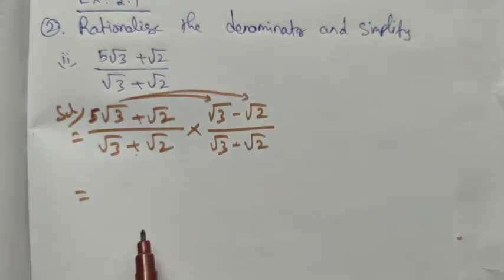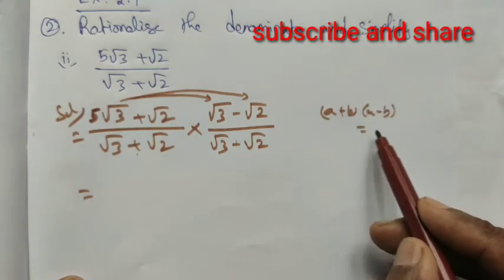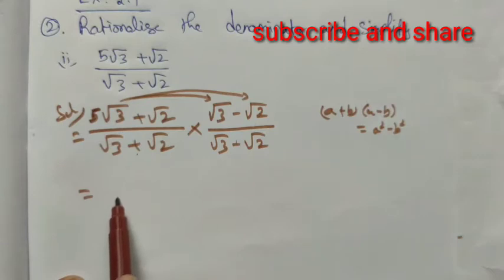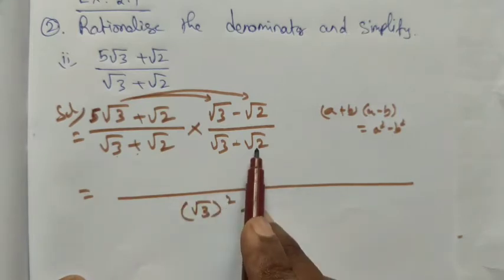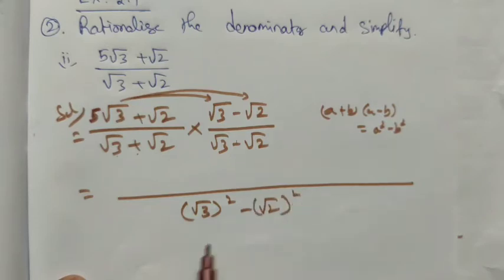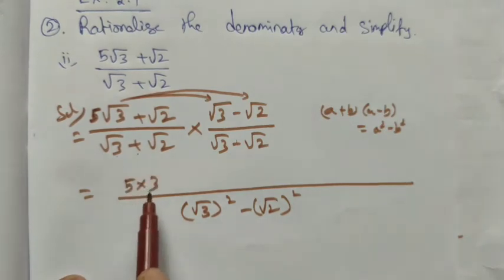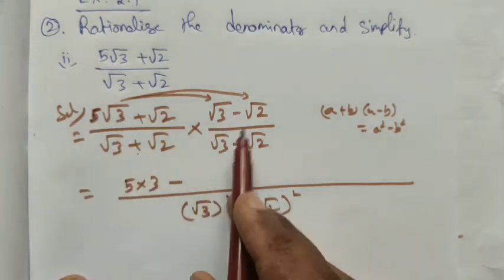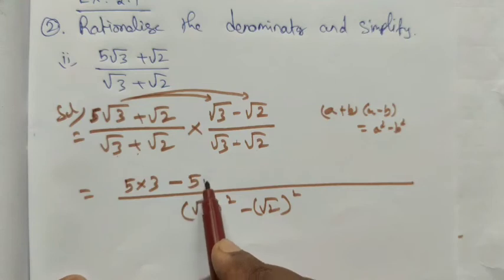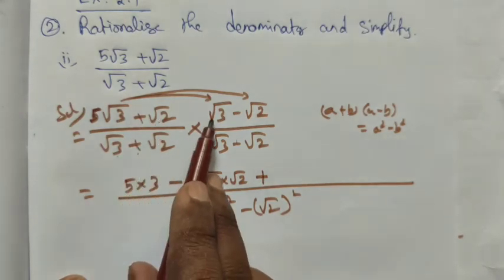Now multiply the terms: binomial into binomial. In the numerator: 5√3 × √3 and 5√3 × √2. In the denominator, we have (a + b)(a - b), which is the a² - b² formula. So the denominator becomes (√3)² - (√2)².